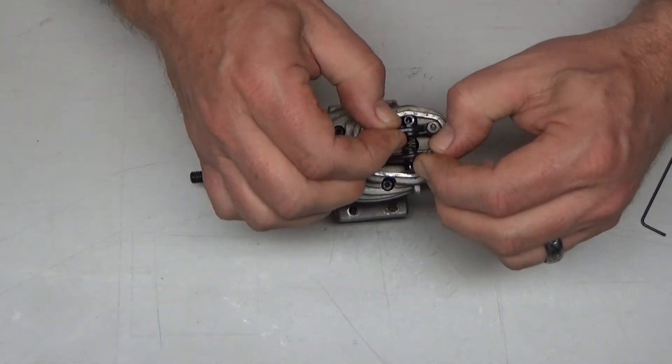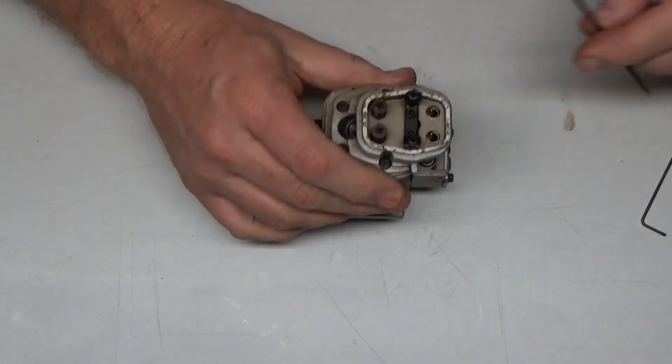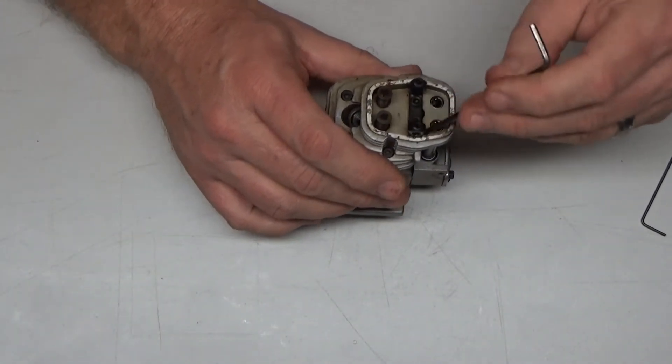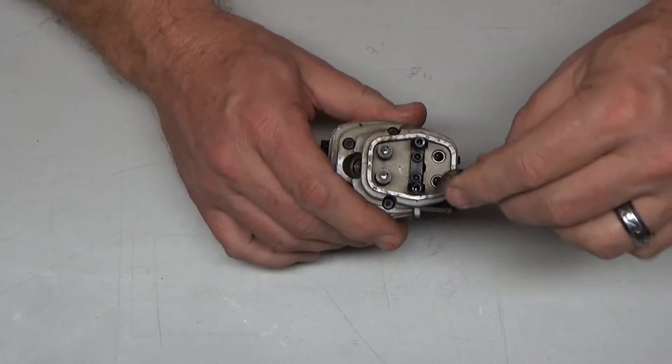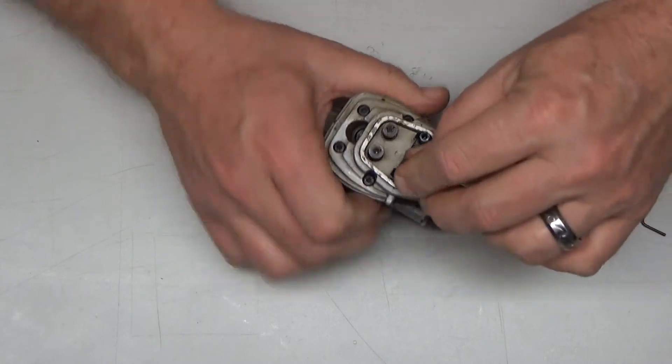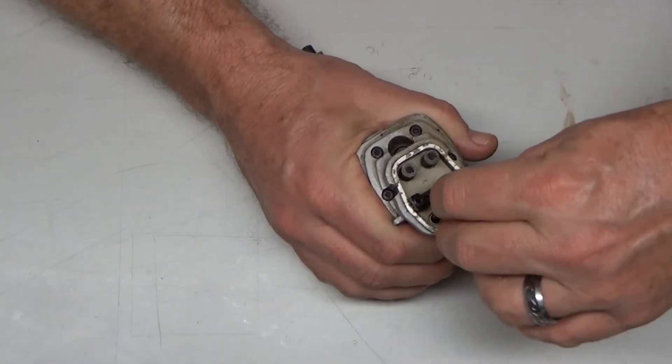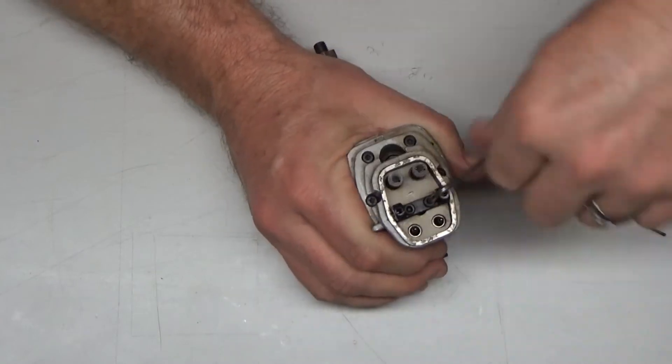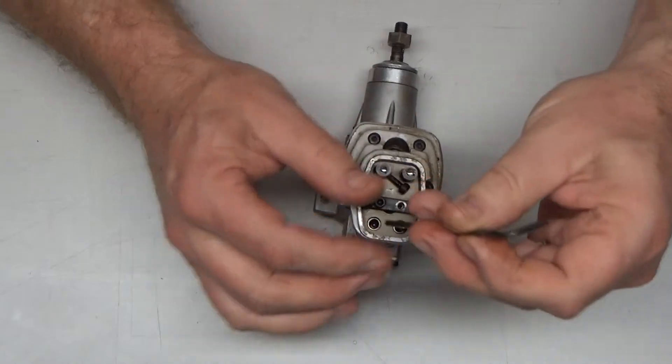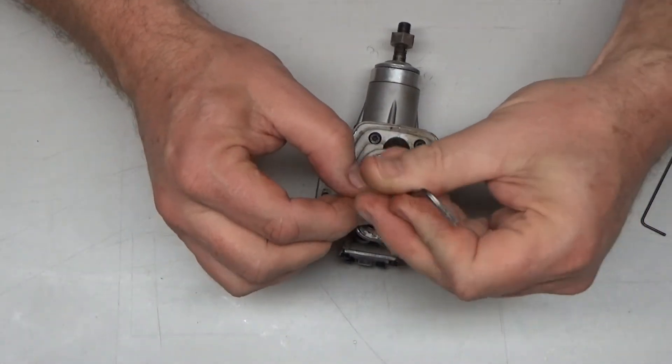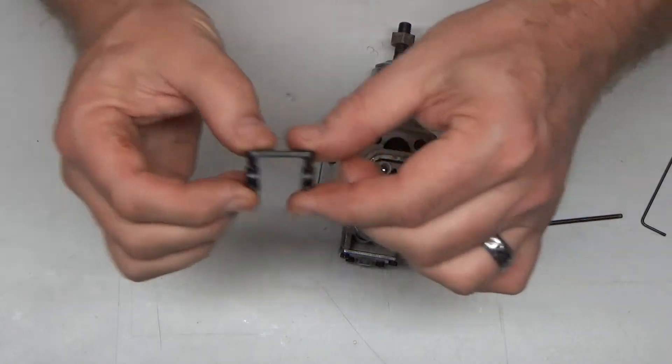There's a little spring here in the middle. I've got to make sure I don't lose that. Oh, okay. My bad. There's two screws holding this bracket on. I forgot. And then there's one more head screw down here. And this is that bracket I was just talking about.